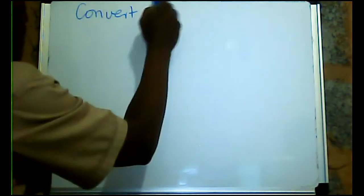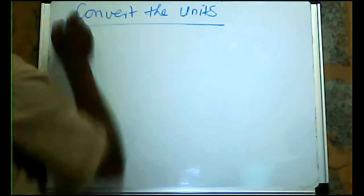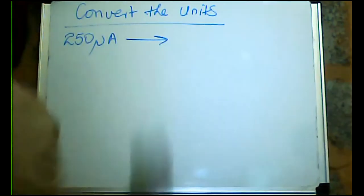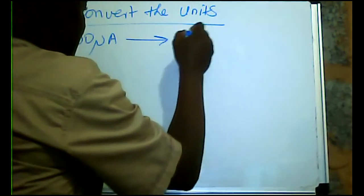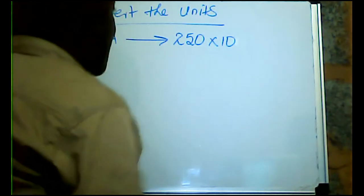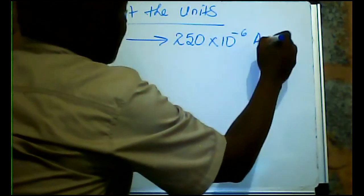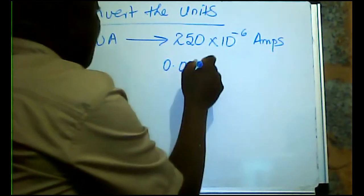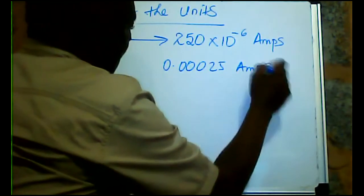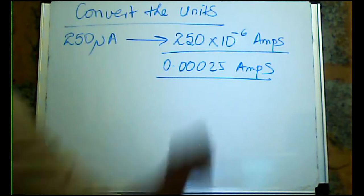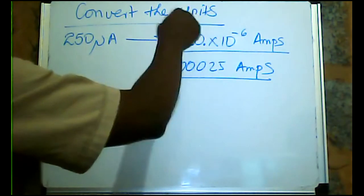Question: convert 250 microamps to SI units. This is 250 multiplied by 10 to the power negative 6 amps, which equals 0.00025 amps.